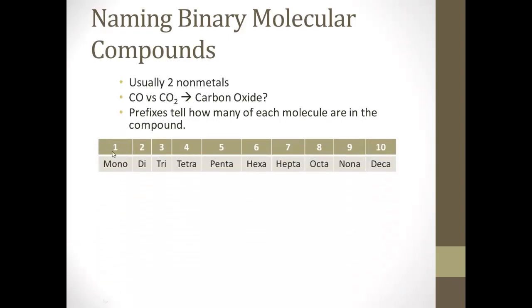Prefixes are going to tell how many of each molecule are in the compound. Here's the prefixes that are used. If there's 1, mono, 2, di, 3, tri, 4, tetra, 5, penta, 6, hexa, 7, hepta, 8, octa, 9, nana, and 10, deca. If you don't know these from math classes, you're going to need to write these down in your list of things to study or your list of things to memorize on the back of your reference table. The hardest one that's probably going to be new to everybody is the tetra.